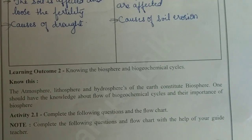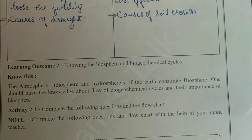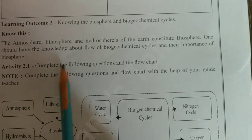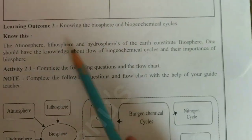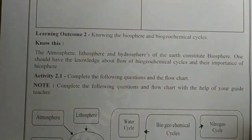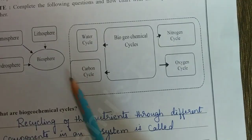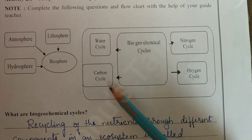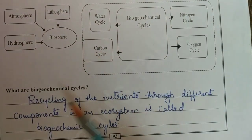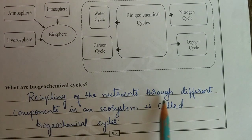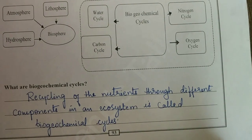The next learning outcome is knowing the biosphere and biogeochemical cycles. Biosphere means the atmosphere, the lithosphere, and hydrosphere of the earth constitute the biosphere. Biogeochemical cycles are: water cycle, carbon cycle, nitrogen cycle, oxygen cycle. Definition: recycling of nutrients through different components in an ecosystem is called biogeochemical cycles.